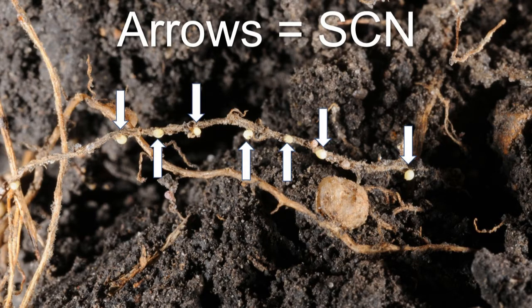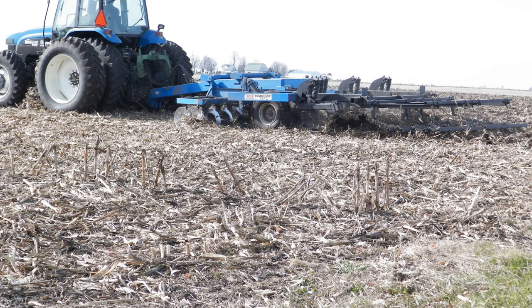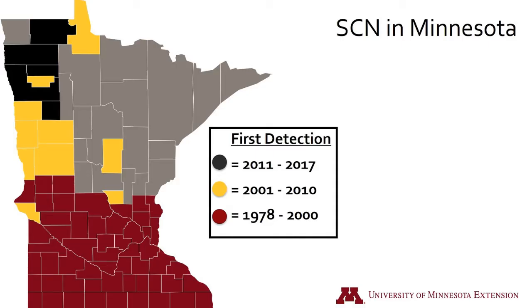SCN is a worm that parasitizes soybean roots. It lives in the soil and moves any way that infested soil does — with wind and water, on humans and animals, and on equipment. SCN was first found in southern Minnesota in the late 1970s, and now through the movement of infested soil can be found as far north as Roseau and Lake of the Woods counties.